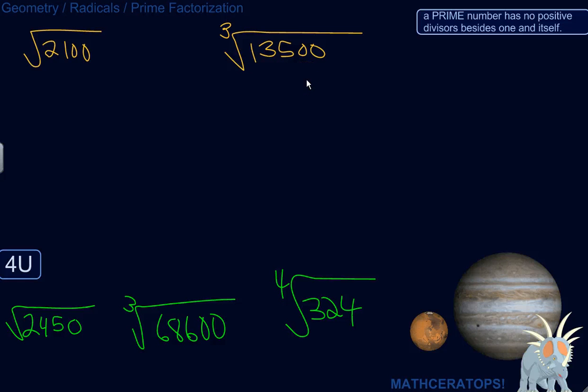Alright, so let's work on simplifying some radicals using the method of prime factorization. I've got the square root of 2100 here. We could leave it at that, but that's not as simple as it could get. We could just get out the calculator and type in square root of 2100 to get some weird decimal probably, but that's not very nice either. So let's see if we can just simplify this and get it in its simplest form.